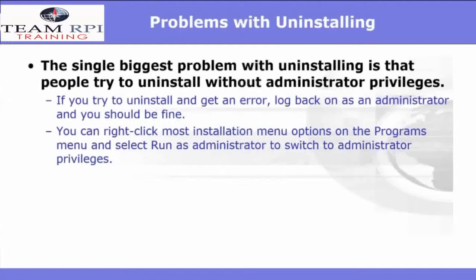If you find an application hasn't installed correctly, the single biggest problem we find with uninstalling is that people try to uninstall without the required administrative privileges. If you try to uninstall and get an error, log back on as the administrator and you should be fine. You can simply right-click on most installation menu options on the Programs menu and select Run as Administrator to switch to administrative privileges.